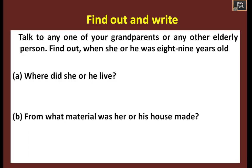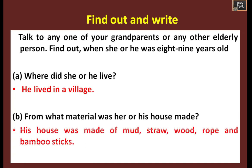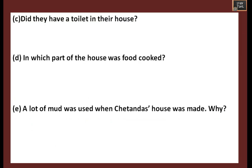Activity: Talk to any of your grandparents or any other elderly person. Find out where they lived when they were 8 or 9 years old - they would have lived in a village or town. Ask from what material their house was made; it would have been made with mud, straw, wood, rope, and bamboo sticks. Also ask if they had a toilet in their house.